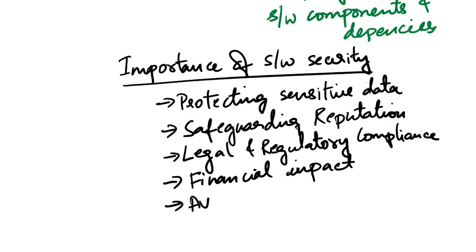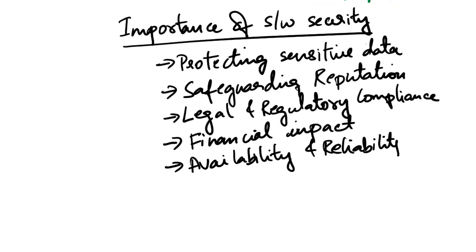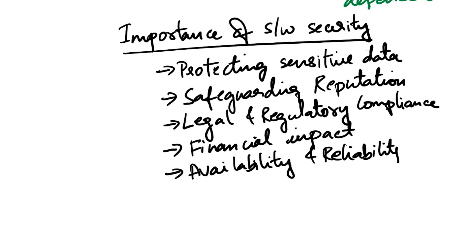Next one is availability and reliability. Software incidents can disrupt the availability and reliability of software systems, causing downtime and productivity losses. Next is vulnerability exploitation. As technology advances, so do the capabilities of cyber criminals. Vulnerabilities in software can be exploited for various purposes, including financial gain, activism, intellectual property, etc.